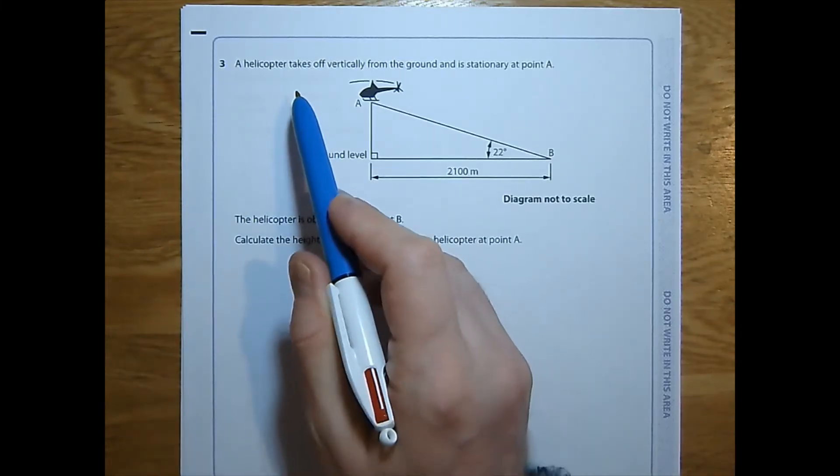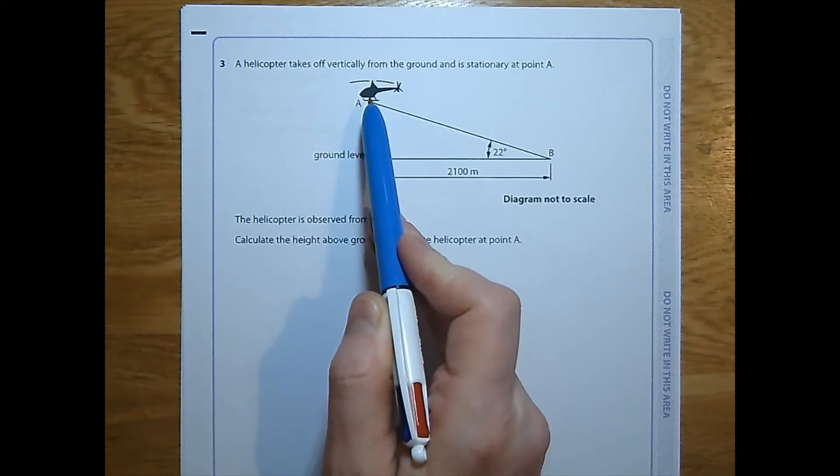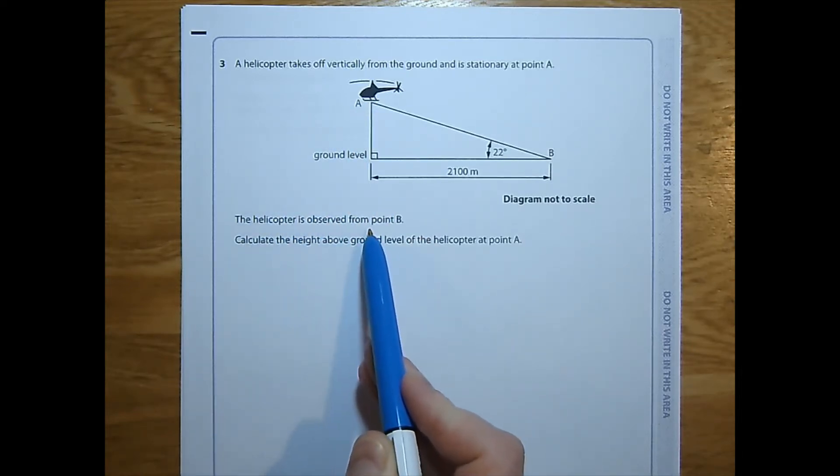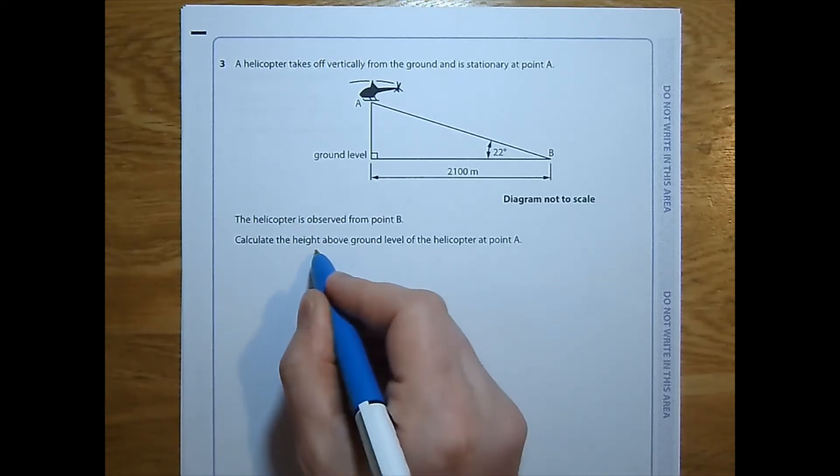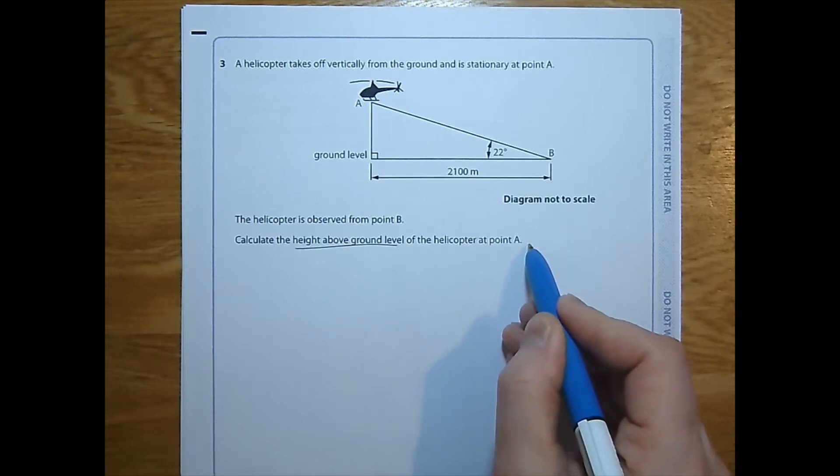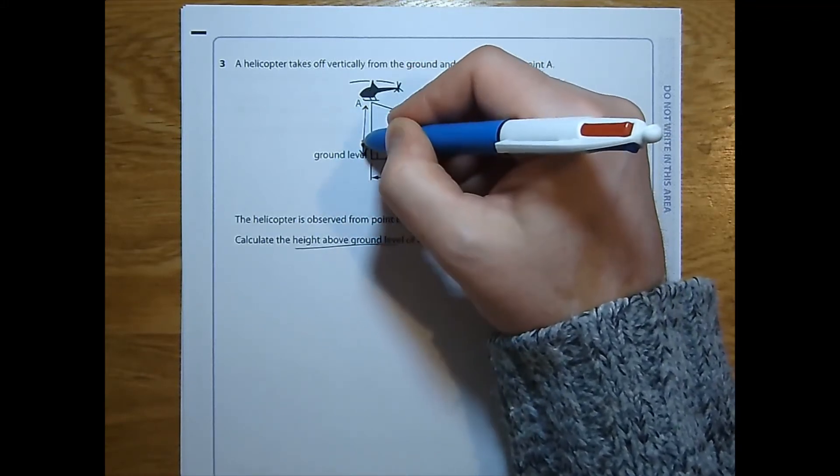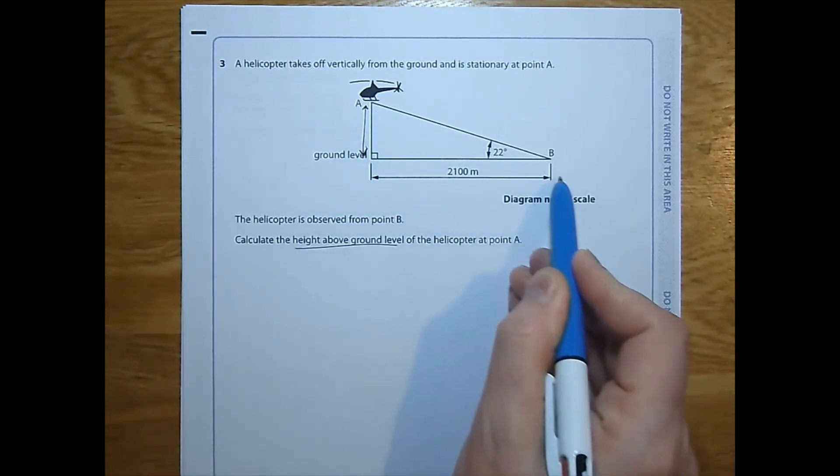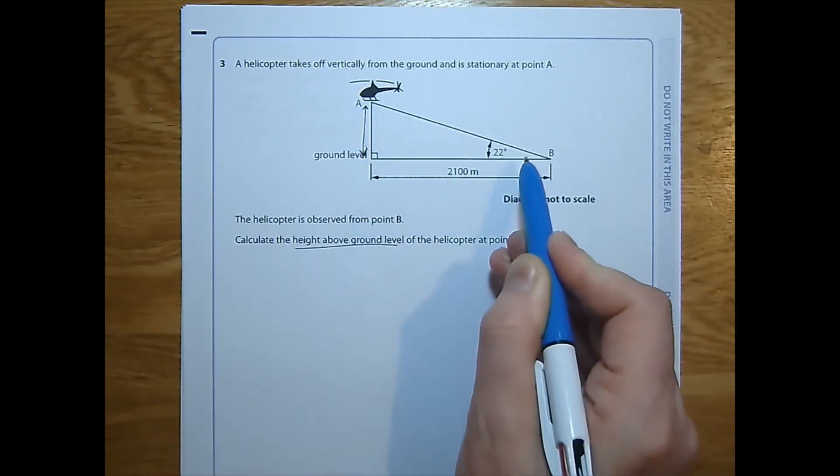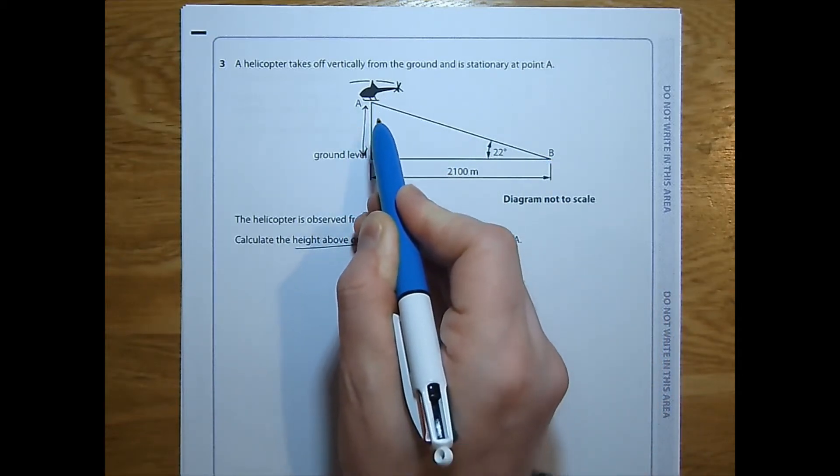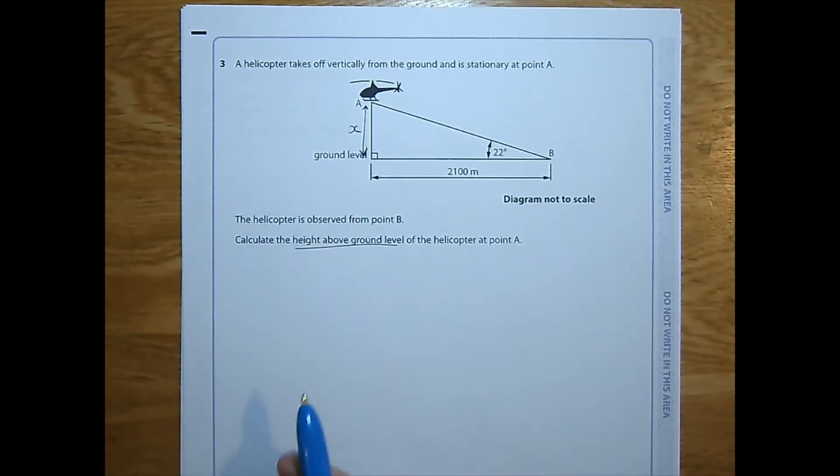Question three. A helicopter takes off vertically from the ground and is stationary at point A. So there's the ground, it's taken off vertically and it's stationary at point A. The helicopter is observed from point B. That's over here, so they're looking at the helicopter over there. Calculate the height above ground level of the helicopter at point A. So what is the height above ground level? That's going to be this distance here straight up from the ground to the helicopter, not this slope along here that's how far the helicopter is from the observer and not how far along the ground but how far along directly in the air. We've been asked for the height above ground level.